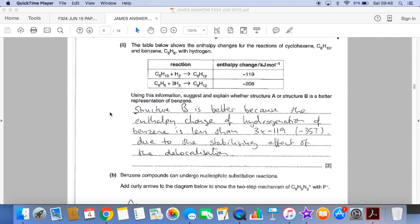So which is the best representation, structure A or B? Well, it's B because the enthalpy change of hydrogenation of benzene, that minus 208, is less than three times that one. And that's due to the stabilising effect of those delocalised electrons.